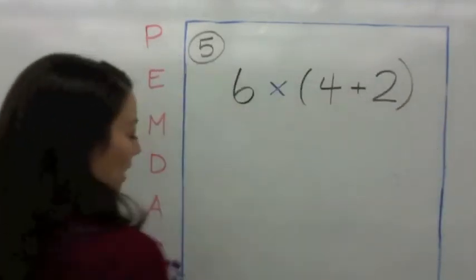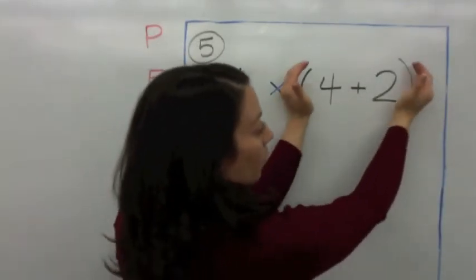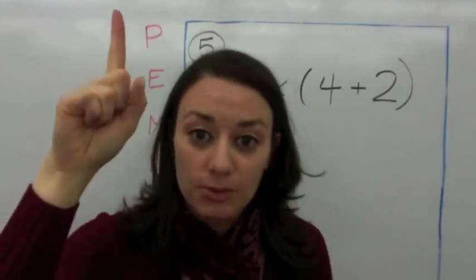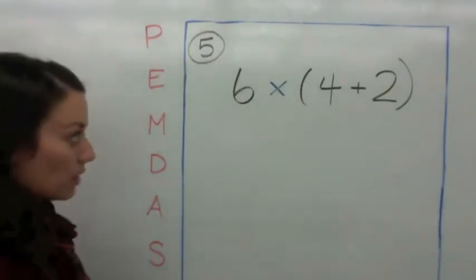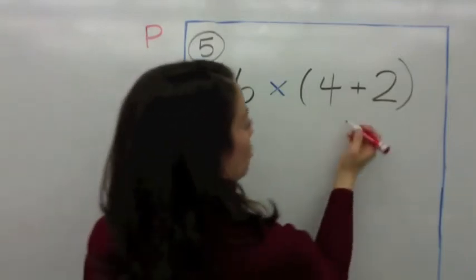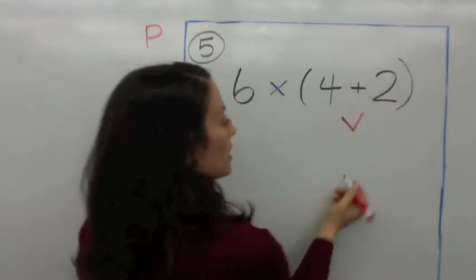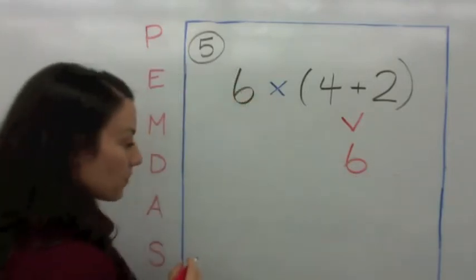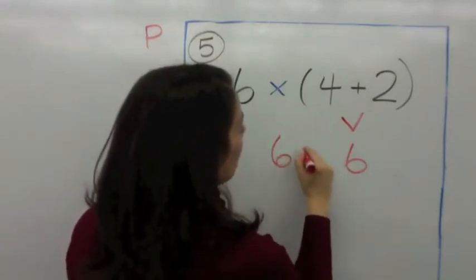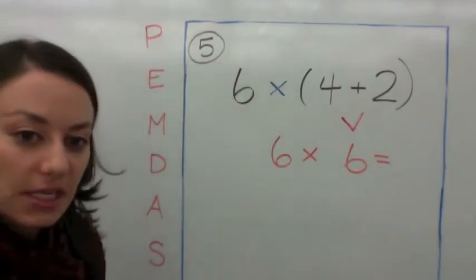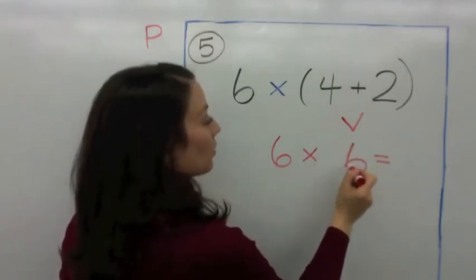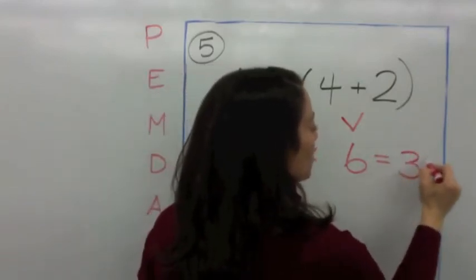In problem 5 we see something new — parentheses. Hold up your hands: these are called parentheses. Parentheses basically mean 'work with me first,' because parentheses is the first operation. What's in the parentheses? It's 4 plus 2. Four plus 2 is 6. Then bring down the multiplication sign and the 6, so now it's 6 times 6. Six times 6 is 36, so the answer is 36.